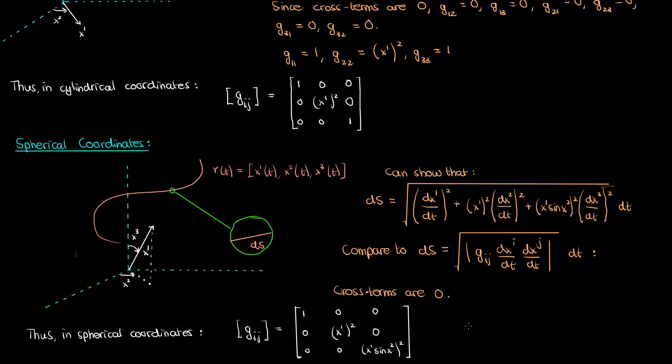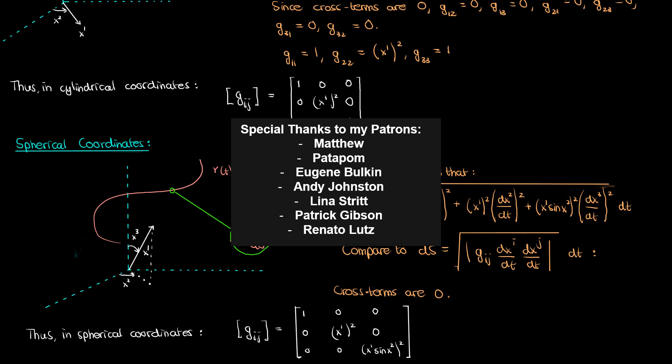The take-home message from this video is that the metric tensor tells us the geometric properties of a coordinate system or space. Specifically, I showed how we can use the metric tensor for different coordinate systems to find the arc lengths of curves in those coordinate systems. In the next lesson, I'm going to talk more about the metric tensor and some neat properties it has. Thanks to the following patrons for their support — if you enjoyed the video, feel free to like and subscribe. This is the Faculty of Khan, signing out.